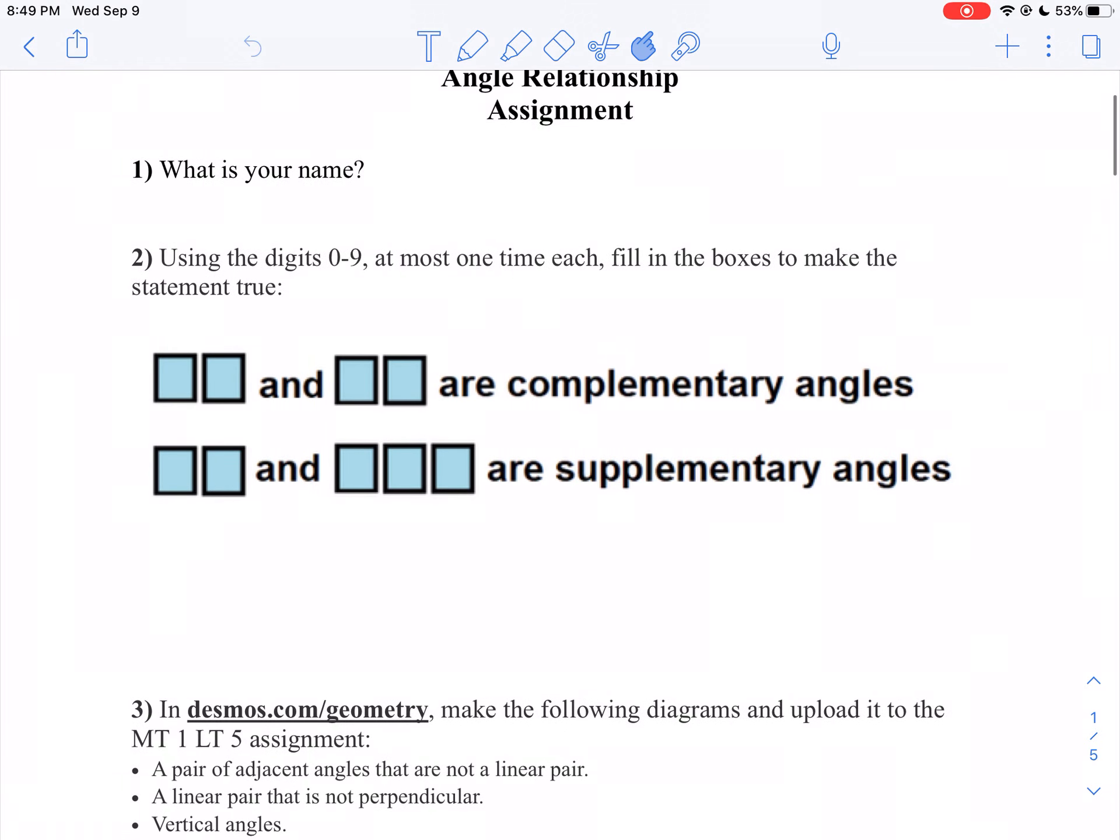This is kind of a frustrating problem because it starts off pretty simple, but then you just run into problem after problem as you try to work through it. I want you to use the digits 0 through 9 at most one time to fill in the boxes to make the statement true.